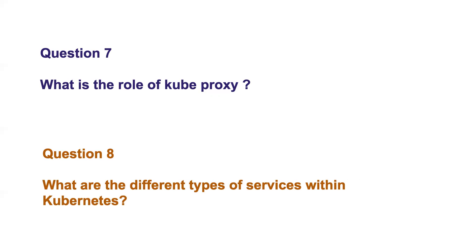Question number eight: what are the different types of services in Kubernetes? A Kubernetes service can be implemented in multiple ways. The three commonly used service types are ClusterIP, NodePort, and LoadBalancer.